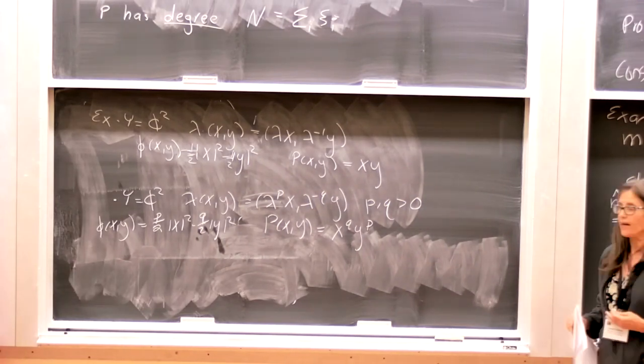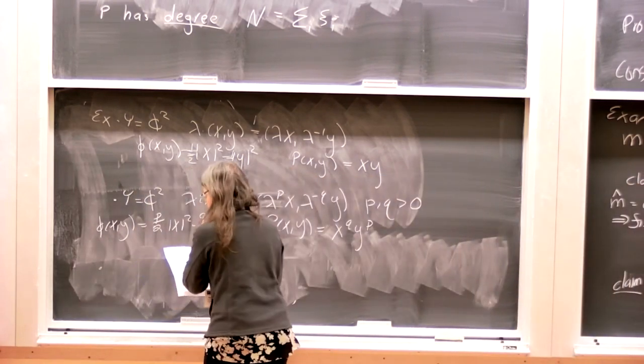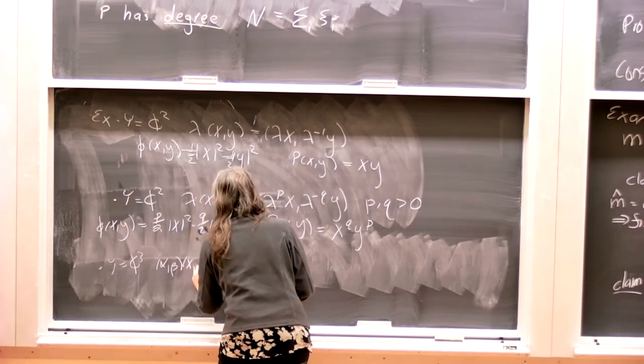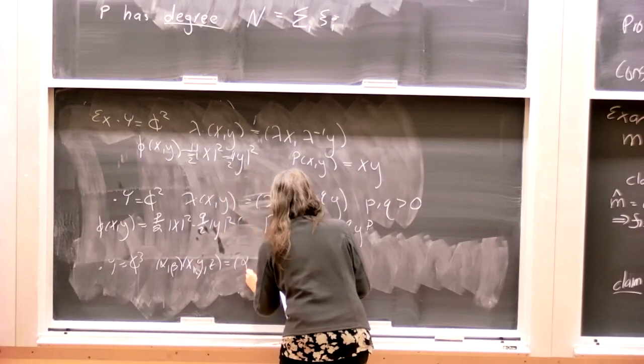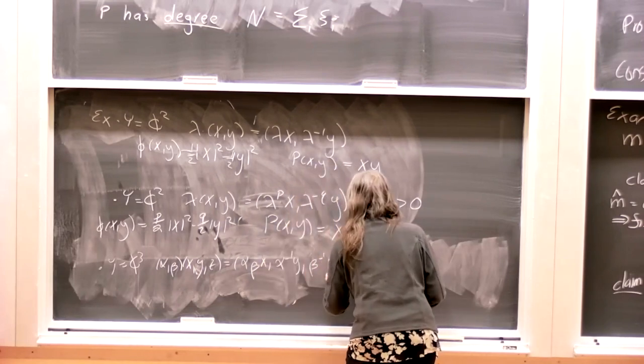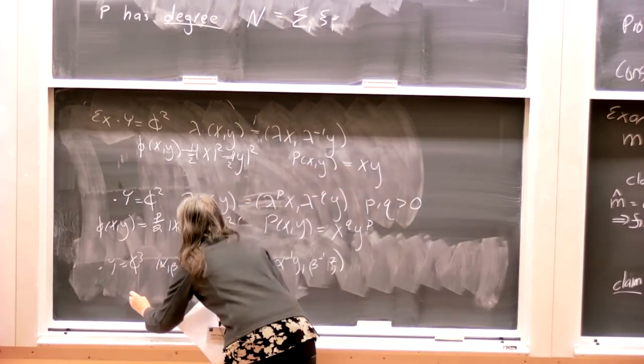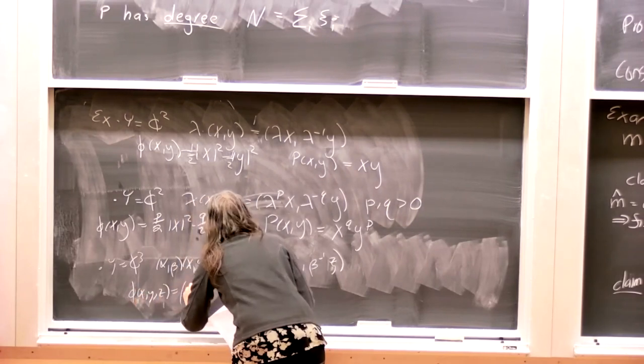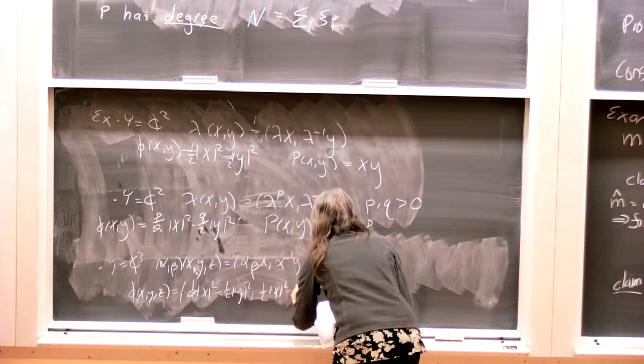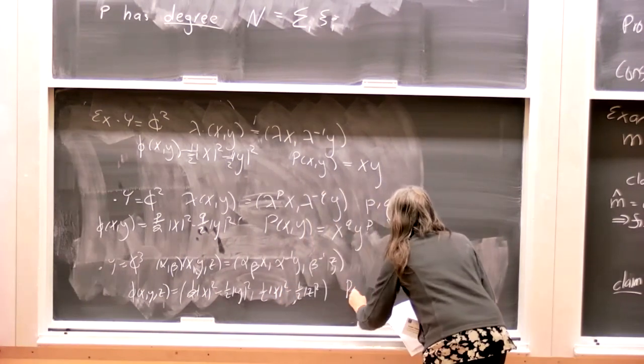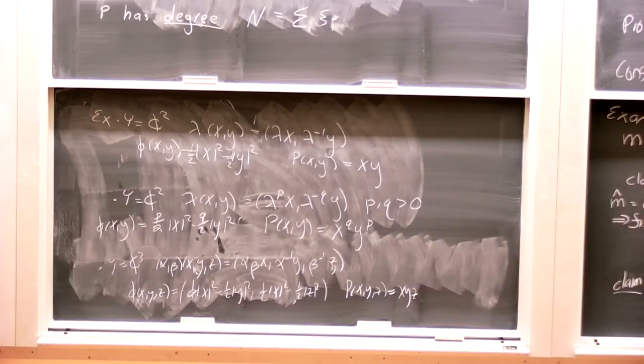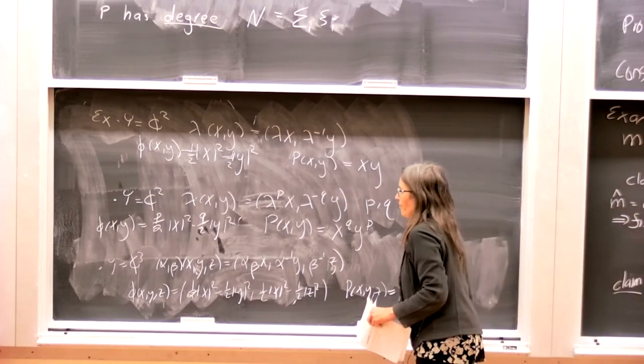And more generally, I can do the same thing, but now, instead of just acting with speed one, I can act with speed p and minus q. And, of course, you're again familiar with the moment map. But now, the defining polynomial is x to the q, y to the p, and it's relatively easy to check that it shows a homeomorphism. I also want to do one example to show that we're not stuck in two dimensions. We can really do this for any representation.